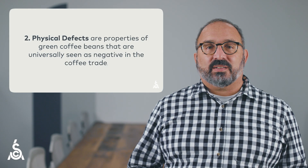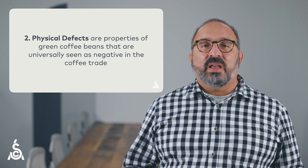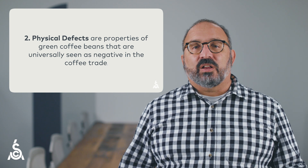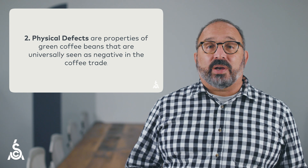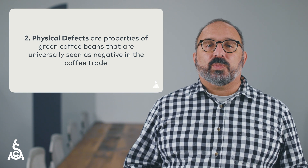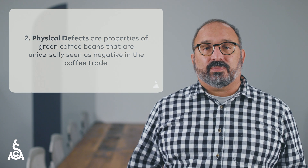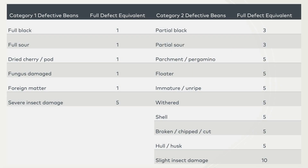Second, physical defects. These are properties of green coffee that are universally seen as negative in the coffee trade. These defects can be counted in a 350-gram sample and compared against a grading standard. The defects are counted in a specific way and detailed in the SCA Protocol and SCA Green Coffee Defect Handbook. Here is a table showing the counting scheme. The important thing is not to memorize the equivalents, but to recognize that all physical defects are not counted equally — they are counted differently according to their severity and importance. The calculated total number of defects is reported in the physical report.